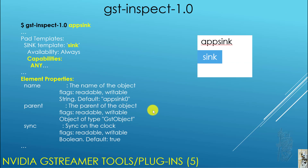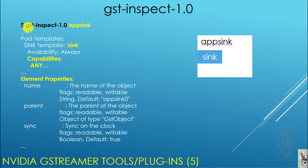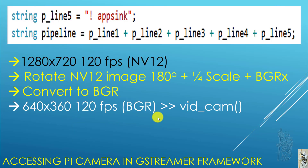Since we already have BGR format that our C code requires for OpenCV, when you do gst-inspect on appsink and look at the sink capability, it can handle anything. For the last element — element four — all you need to specify is exclamation point appsink. You don't have to specify anything else. The pipeline string is then simply the concatenation of these five lines.